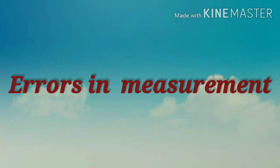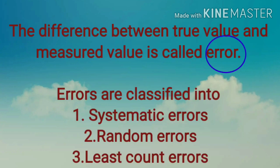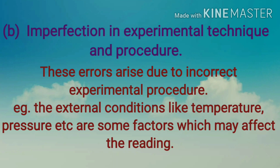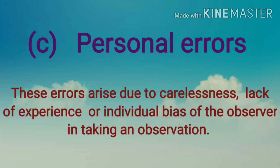Errors in measurement: the difference between the true value and the measured value is called an error. Errors are classified into systematic errors, random errors, and least count errors. Types of systematic errors include: instrumental error, which arises due to imperfections of the measuring device such as manufacturing defects or incorrect calibration; imperfection in experimental technique and procedure, arising due to incorrect experimental procedure or external conditions like temperature and pressure; and personal error, arising due to carelessness, lack of experience, or individual bias of the observer.